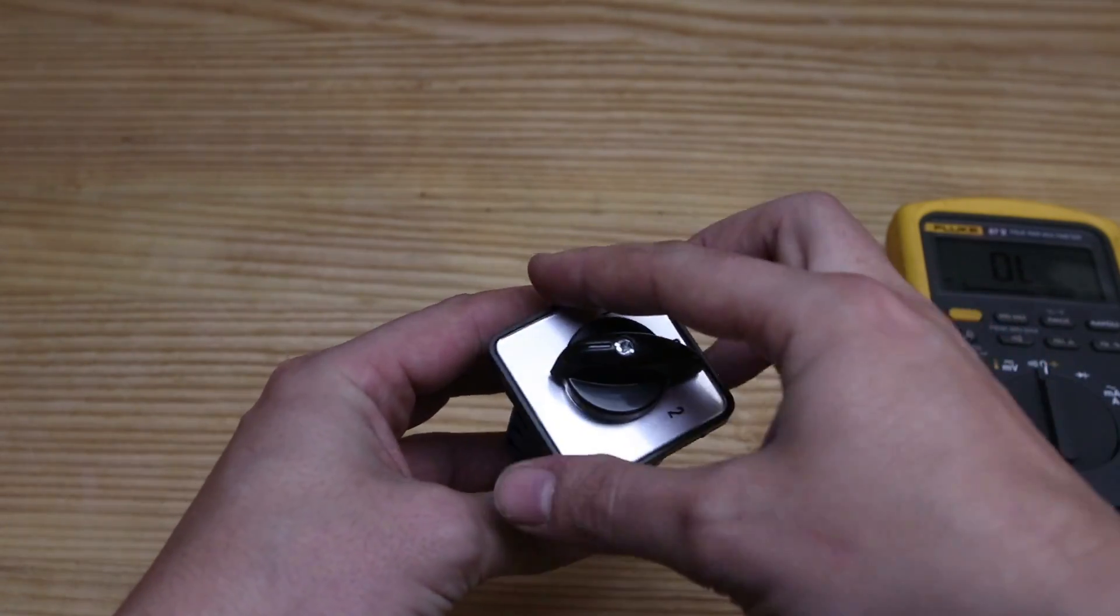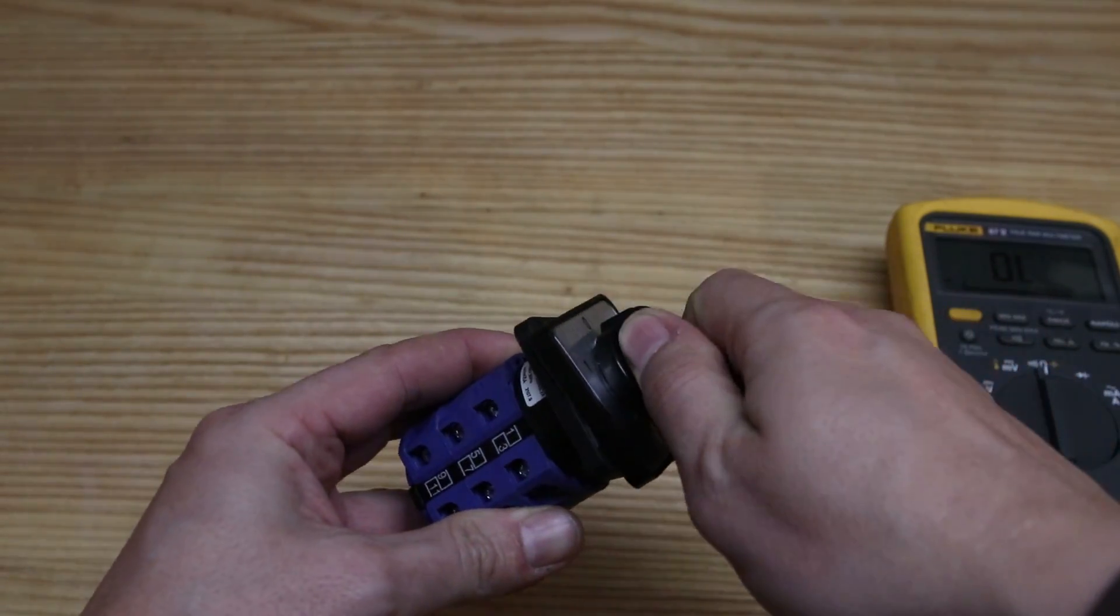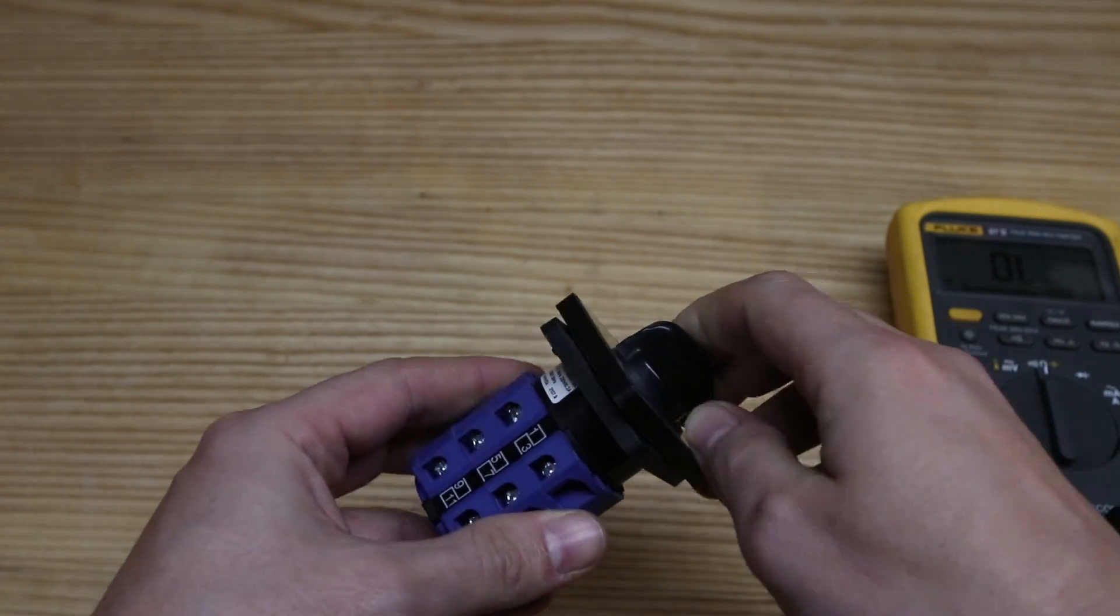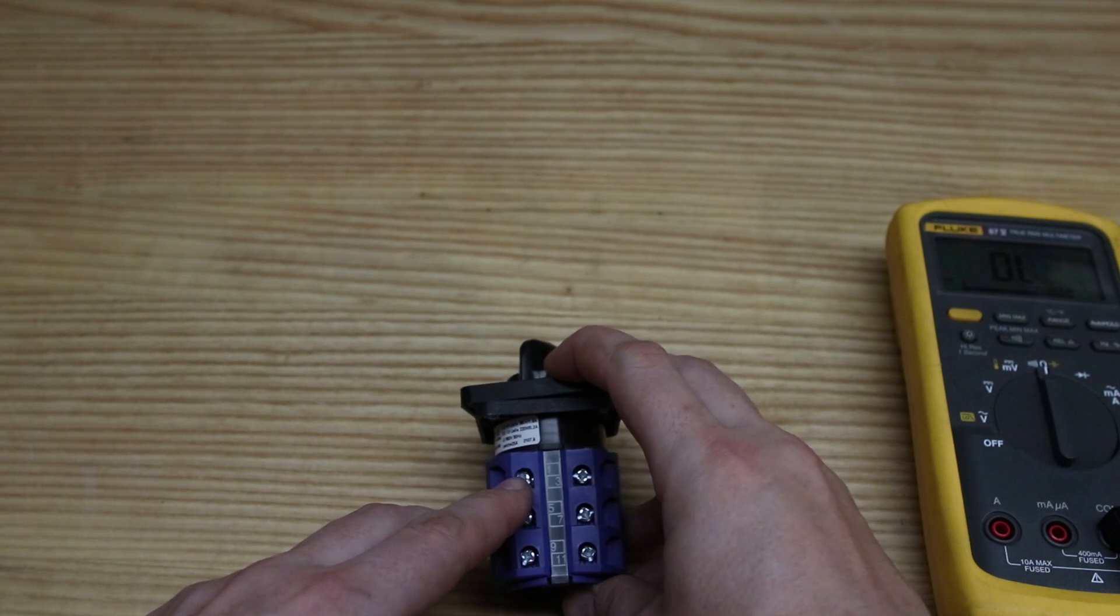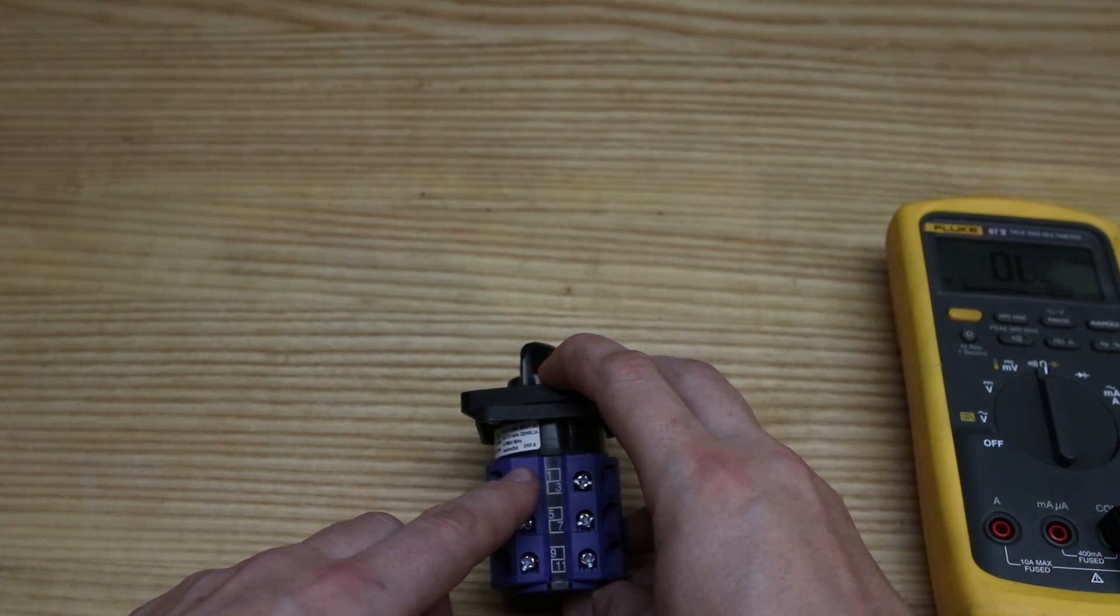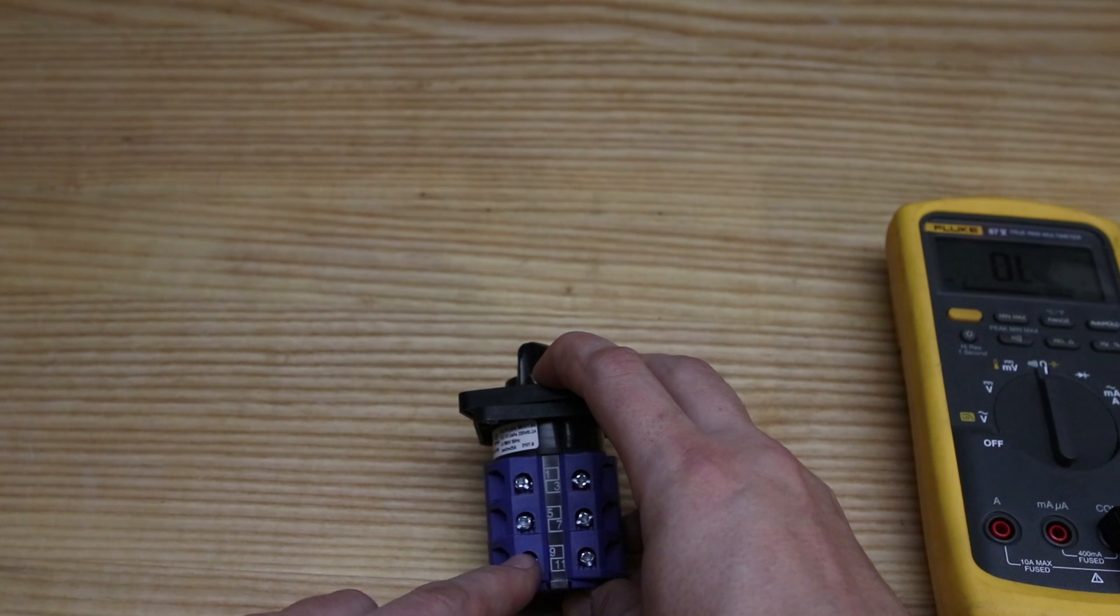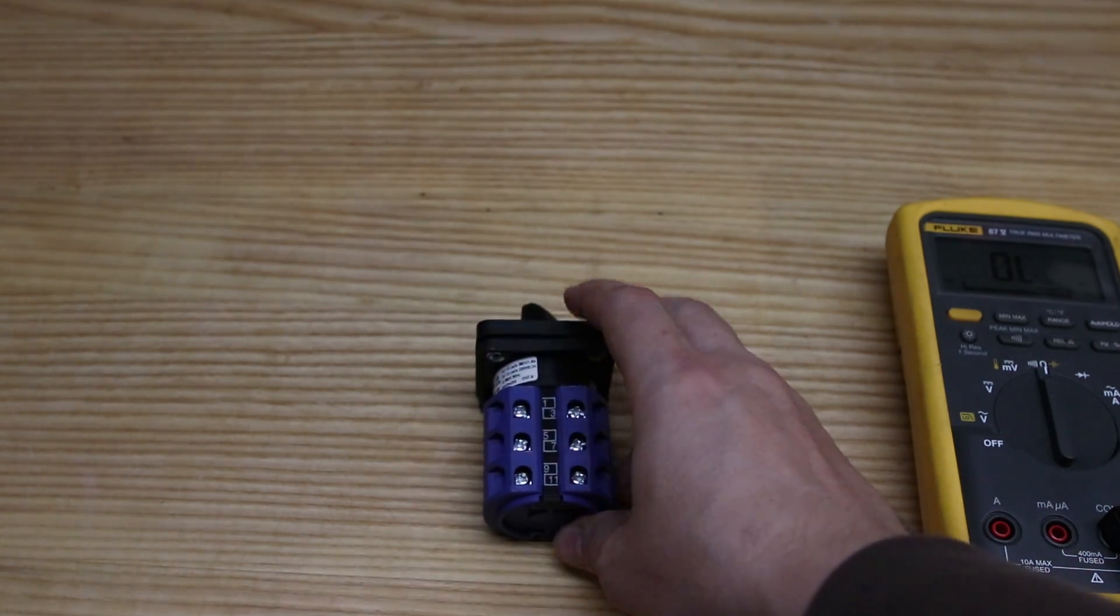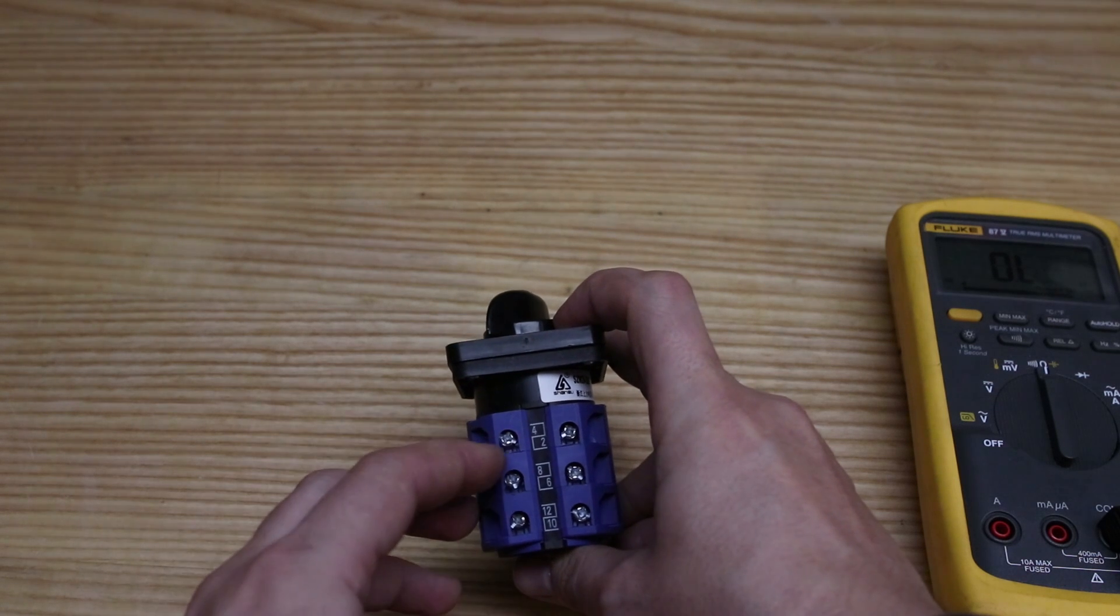First thing is you want to make sure you know which position you're in. This switch has come with this plate that's not fixed, so you want to make sure you know what you want. Right now we're in position one. The actual connections are all laid out on one side or even on the other side. Number one is this one, on this other side you have two, four.